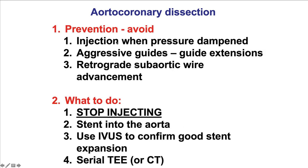How to prevent it? Number one rule is to avoid injections when there is pressure dampening. It is important to repeat this again and again because it's a critical rule for angiography and PCI. There should never be contrast injection with pressure dampening because bad complications such as aortocoronary dissection can occur, especially when aggressive guides like the Amplatz left are used and when guide extensions are intubated deeply into the coronary vessels.